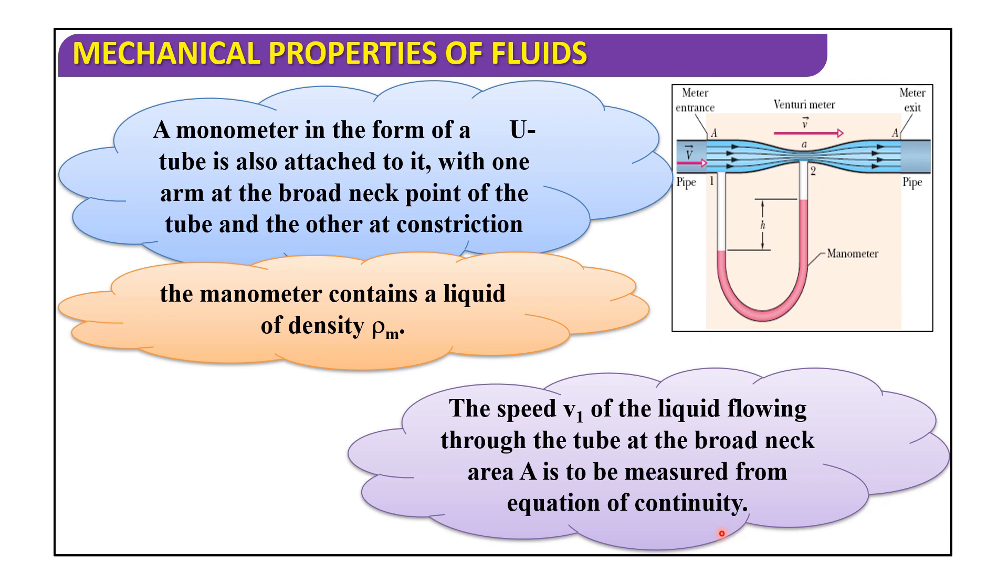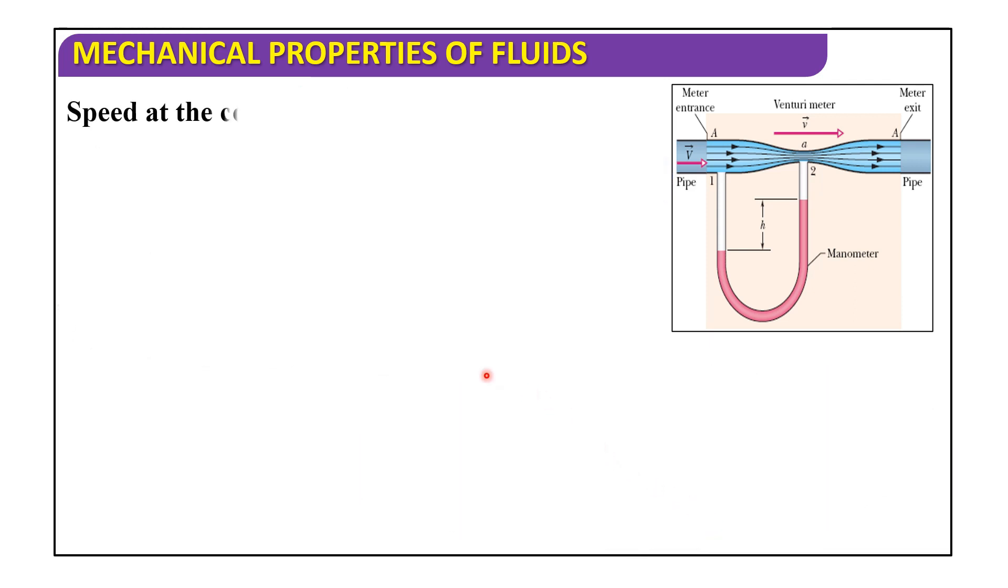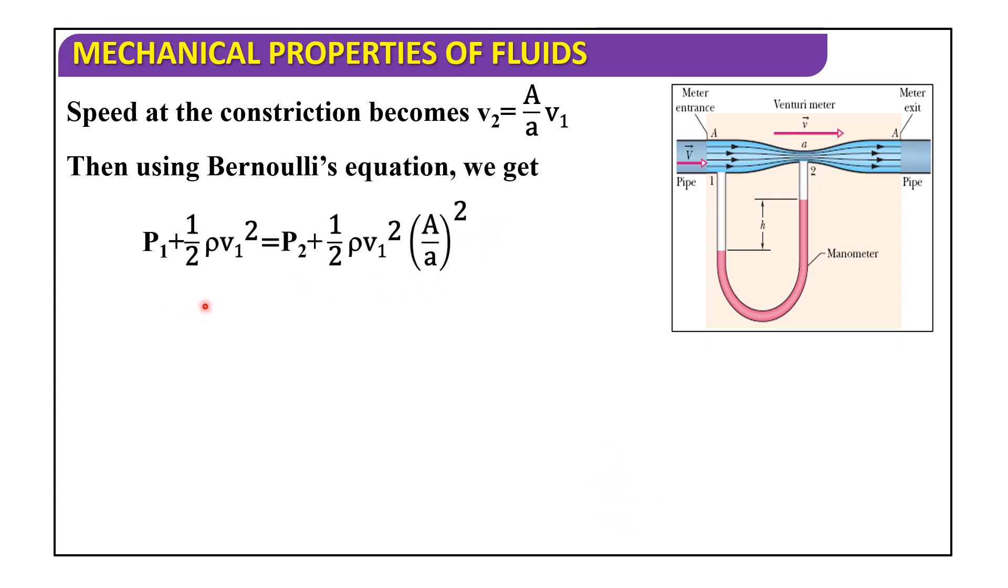The speed v1 of the liquid flowing to the tube at the broad neck area A is to be determined from the equation of continuity. The speed at the constriction becomes v2 equals (A/a)·v1. Then, using Bernoulli's theorem, we get p1 + (1/2)ρv1² equals p2 + (1/2)ρv2²·(A/a)².